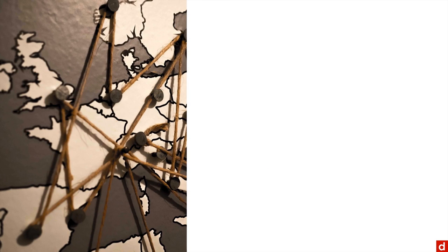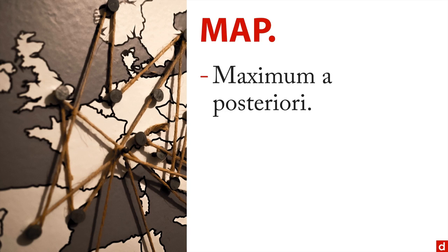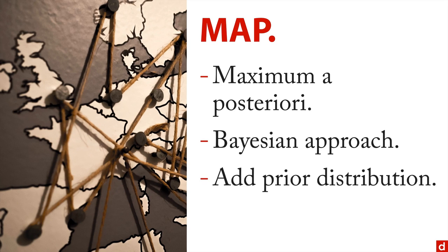The third approach that's pretty common is something called MAP, for maximum a posteriori. This is a Bayesian approach to parameter estimation. And what it does is it adds the prior distribution, and then it goes through sort of an anchoring and adjusting process.